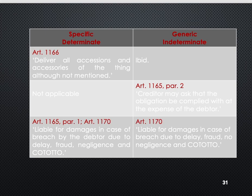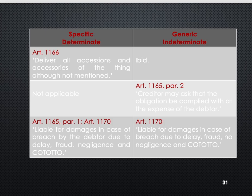The remedies of the creditor when the debtor fails to comply are: demand for specific performance, rescission or cancellation, or payment of damages. Under Article 1165, when what is to be delivered is a determinate thing, the creditor may compel the debtor to make the delivery. For an indeterminate or generic thing, he may ask that the obligation be complied with at the expense of the debtor. If the obligor delays or has promised to deliver the same thing to two or more persons who do not have the same interest, he shall be responsible for any fortuitous event until he has effected delivery.